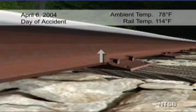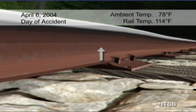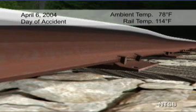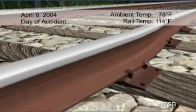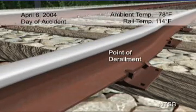The rail moved upward and then outward, creating a bow in the rail that allowed the train's wheels to drop in between the rails.